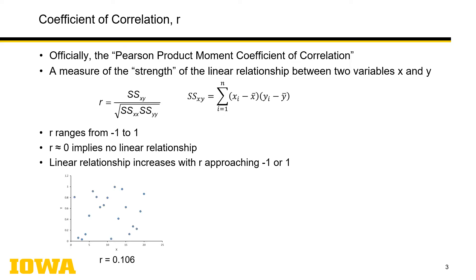Let's look at some examples. Here's an example of a lousy linear relationship, with an r value of 0.106. You can see this highly scattered data has no discernible linear trend — at some x value, it could have a low or very high y value. There's no way to determine an increase in x corresponding to an increase or decrease in y, resulting in a low correlation coefficient.